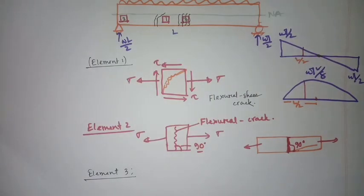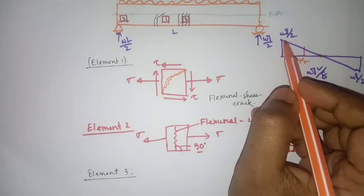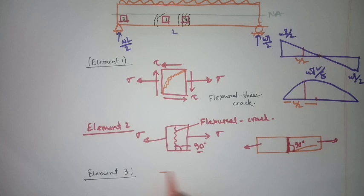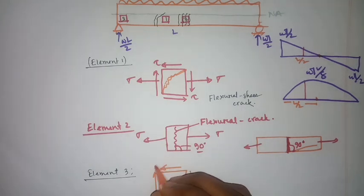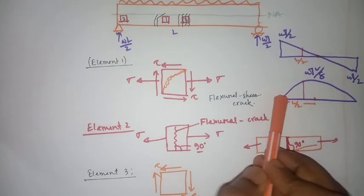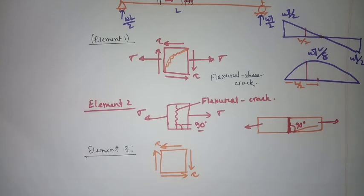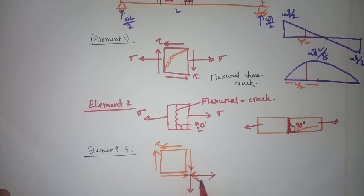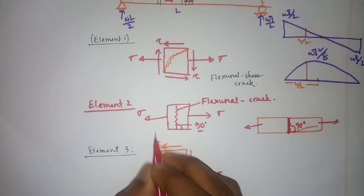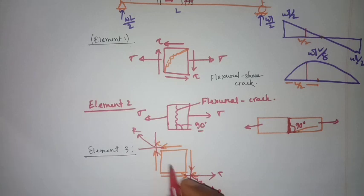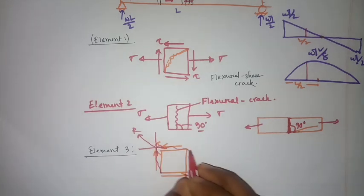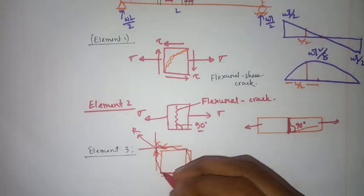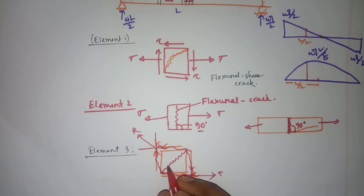Now for element three, at the support, maximum shear will be developed here. If I draw the block, here only shear stress acts — there is no bending because bending is zero at the support. You can see two shear stress components, and if these two components make a resultant, the resultants from both sides will create a crack.